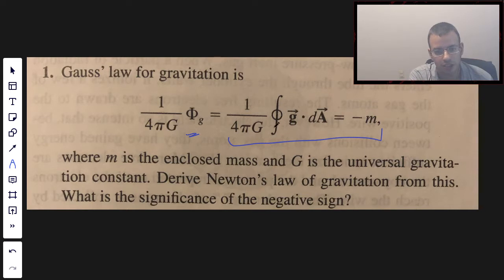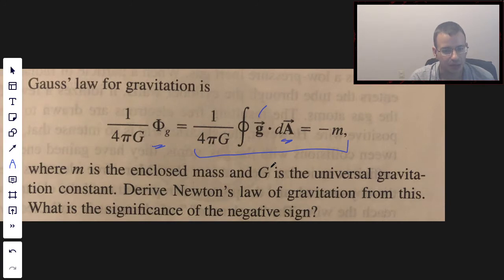This is a closed integral over an area. This is a dot product, and this g right here actually means the gravitational field.